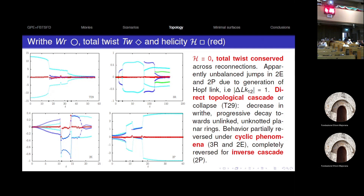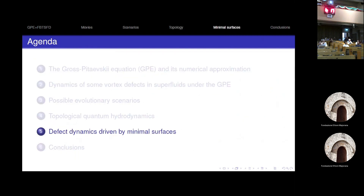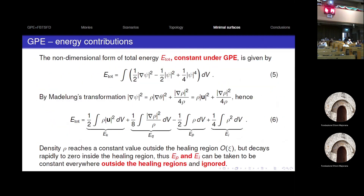Writhe is going down as a signature of relaxation towards unlinked rings. Now, regarding energy: in the Gross-Pitaevskii equation, energy can be computed via the Madelung transformation and divided into four contributions — kinetic energy, quantum energy, potential energy, and internal (interaction) energy. Just outside the vortex tubes, where density quickly reaches one, the last two parts are just a constant contribution. Where there is a gradient of density, kinetic and quantum energy play a bigger role.